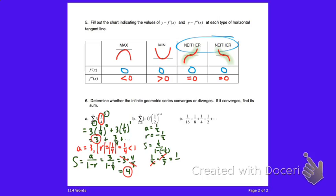I always hesitate here because there are many places to make a silly error. Just to verify: when k equals zero, we have one-half to the first power. The next term uses negative one to the first power (which is negative one) times one-half squared equals negative one-fourth. That confirms the common ratio is negative one-fourth divided by one-half, which is negative one-half.